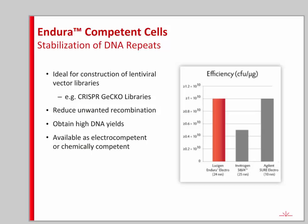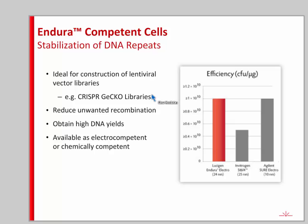Finally, we have the Endura cells, which are very good for inserts that contain repetitive DNA. The CRISPR GECCO library group — the Fen group — recommends using our Endura cells for making lentiviral libraries. They reduce unwanted recombination and give high yields, and are available as electrocompetent or chemically competent.